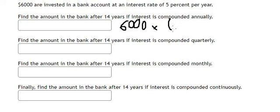We multiply by 1 plus the interest rate, which is 5%. And the time is 14, so we have 14 here. We calculate this one.